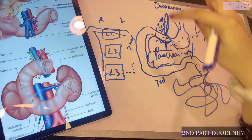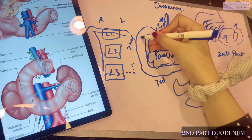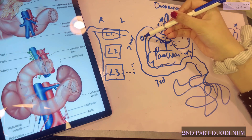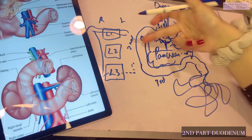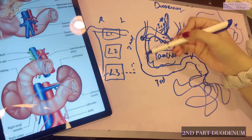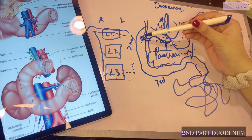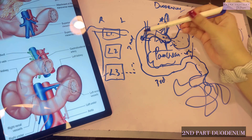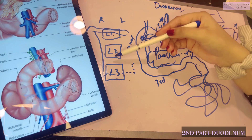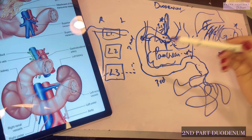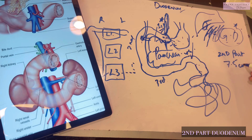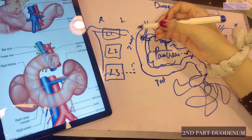The second part of the duodenum is the descending part. It begins at the superior duodenal flexure and ends at the inferior duodenal flexure. It contains the major duodenal papilla, located posteromedially, which is where the bile duct and pancreatic duct open into the duodenum to deliver their enzymes. The major duodenal papilla lies 8 to 10 centimeters distal to the pylorus. This part extends from the right border of L1 to the lower border of L3 and is approximately 7.5 centimeters long.